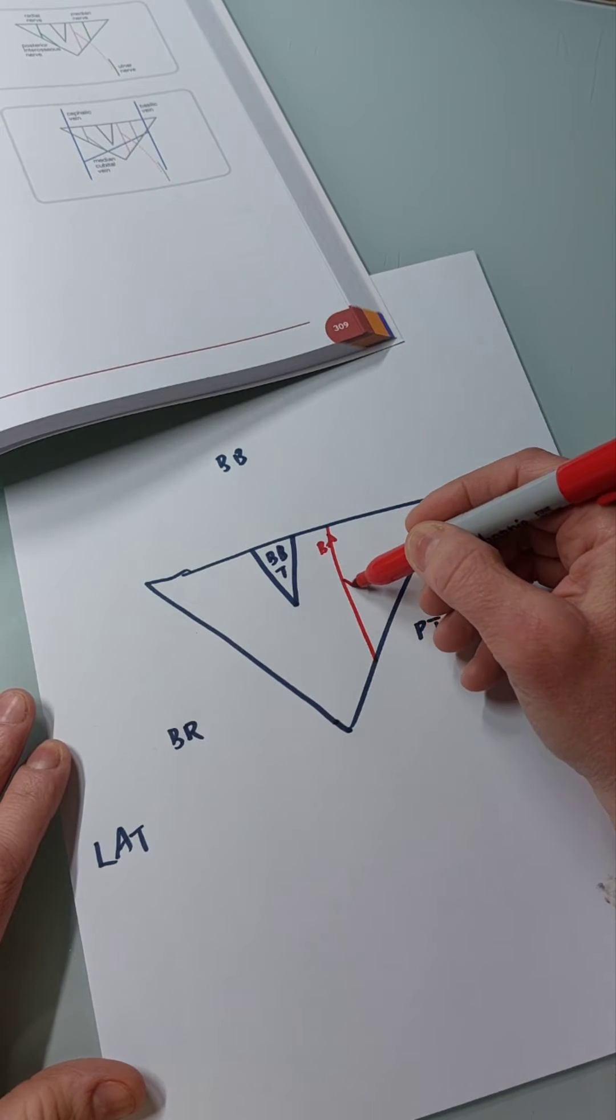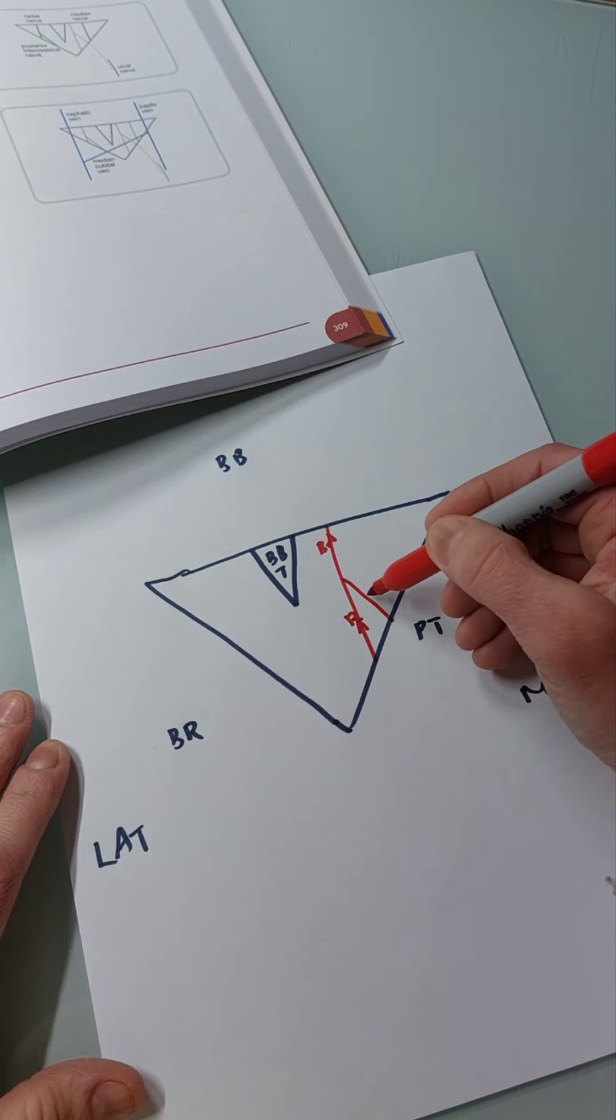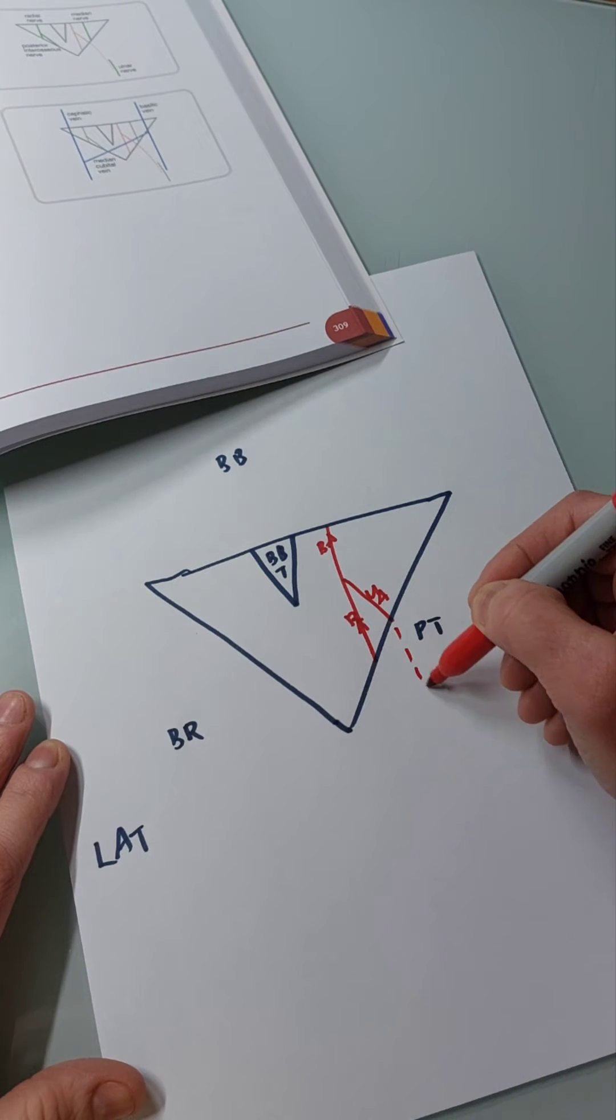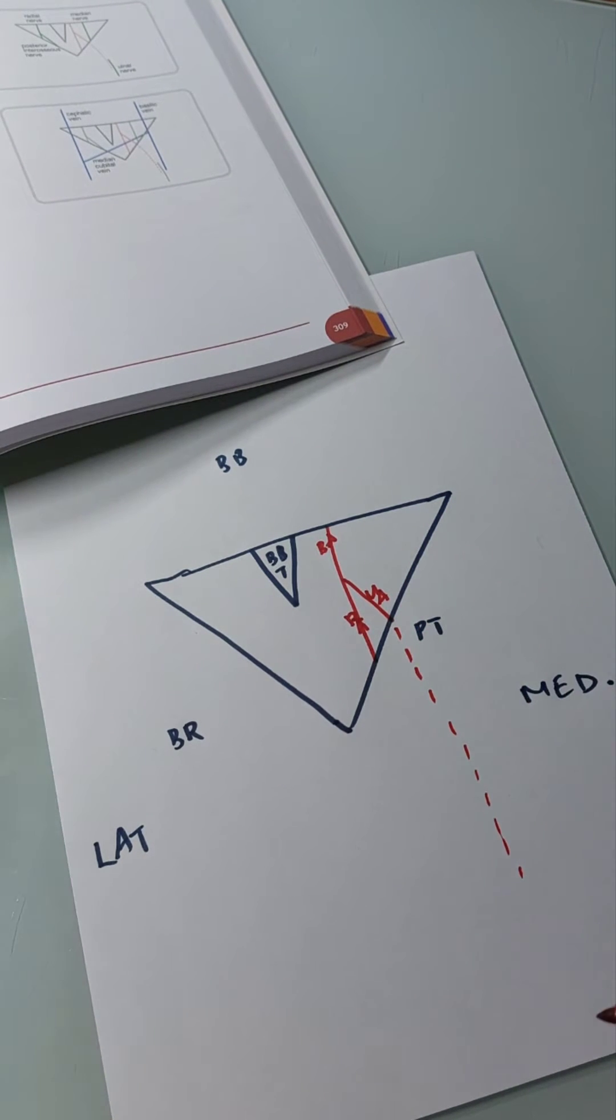The brachial artery then divides into your radial artery and your ulnar artery. The ulnar artery passes down the medial side of the forearm. As you'll see in a moment when we add the nerves, that's useful.